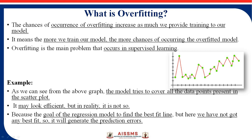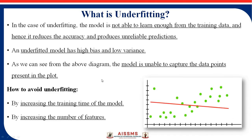As we can see, the model tries to cover all the data points present in the scatter plot, and it may look efficient, but in reality it's not. The goal of a regression model is to find the best fit line — a straight line. Since we have not gotten the best fit line here, each point has errors. This is the concept of overfitting.